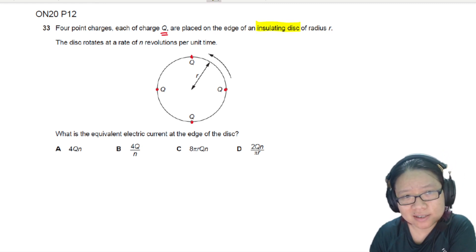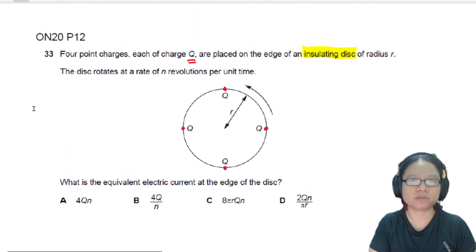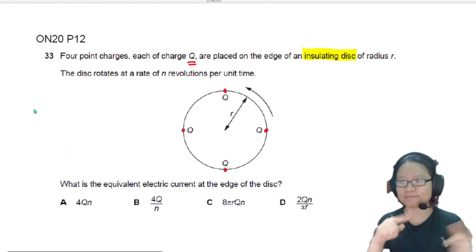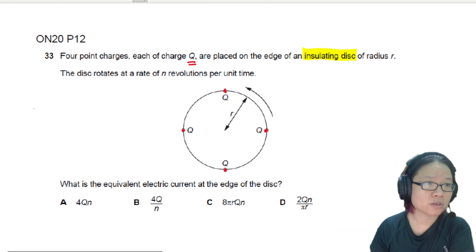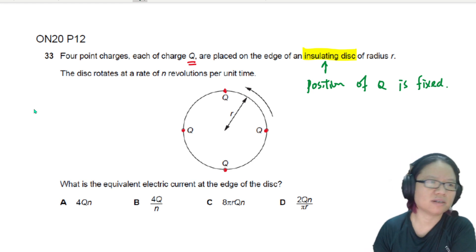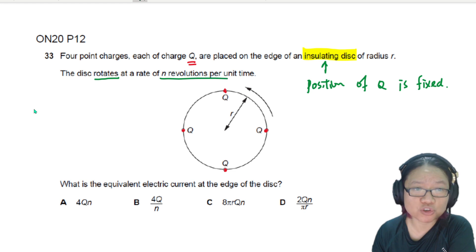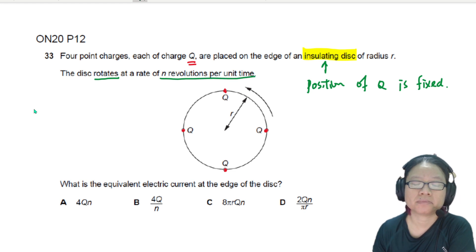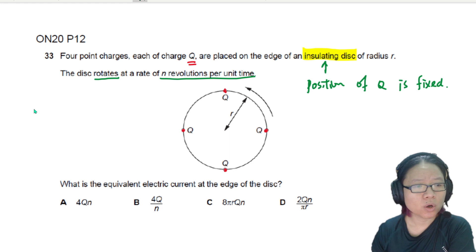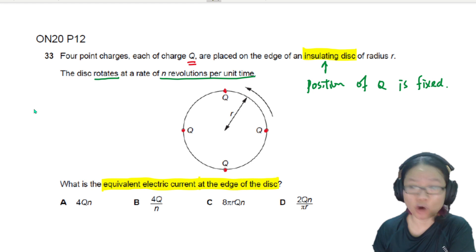So when we see the term insulating disk, this means that this charge Q is not going to run around — it's not going to suddenly travel or be conducted away. So it means the position of Q along the disk is fixed. And it says here that the disk rotates, turning at a rate of N revolutions per unit time. So, what is the equivalent electric current at the edge of the disk?